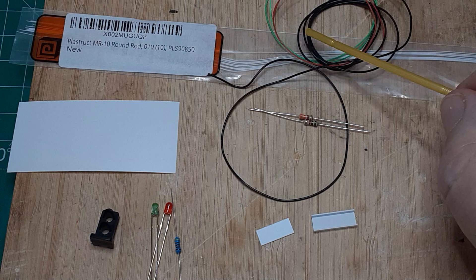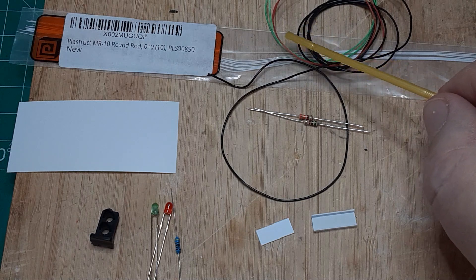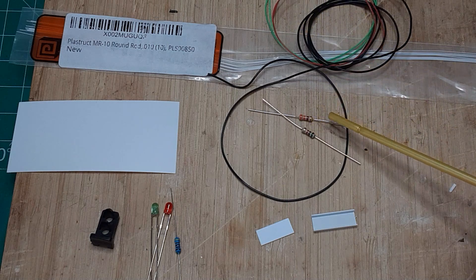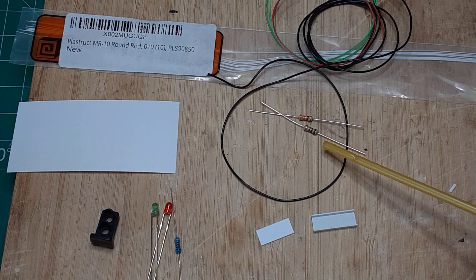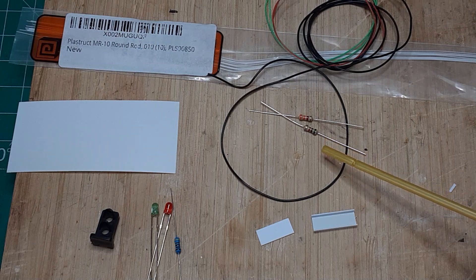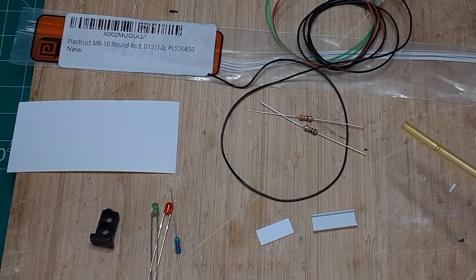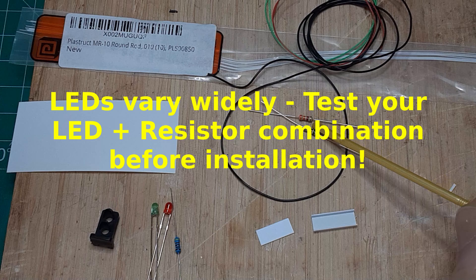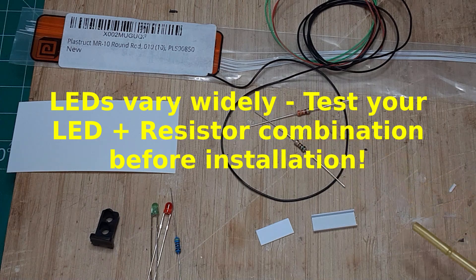You'll need some hookup wire. I use 30 gauge wire in red, green, and black. Finally, you'll need two resistors per signal, not one. You may find, as I did, that the resistors supplied with the signal kit are not adequate. The kit includes 1,600 ohm resistors. I ended up using 3,300 ohm resistors on the red LEDs and 5,100 ohm resistors on the green LEDs.